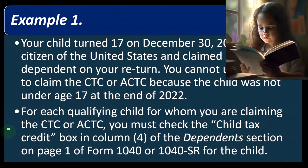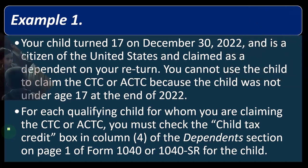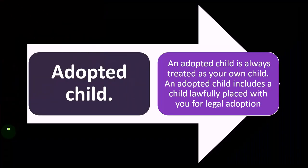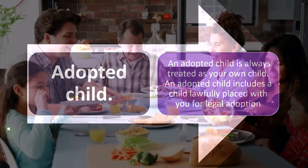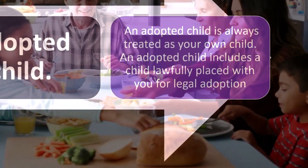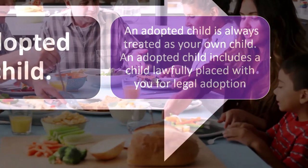Page one of Form 1040 is where you put your dependents — yourself, your social security numbers, and all personal information including your dependents. You check off whether they qualify for the child tax credit, with the actual calculation of the child tax credit appearing on the second page of Form 1040. An adopted child is always treated as your own child, and an adopted child includes a child lawfully placed with you for legal adoption.